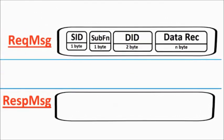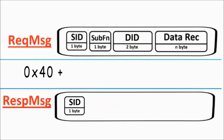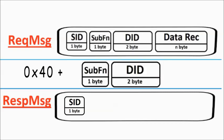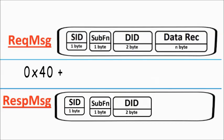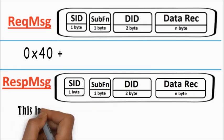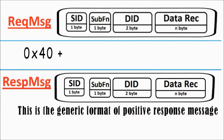The positive response message format is almost similar to the request message format. Except for the addition of hexadecimal 40, the service ID field remains the same. The sub-function field and the data identifier field remain exactly the same. And the data record field is extremely customized to the service. This is the generic format of the positive response message from server to the client.